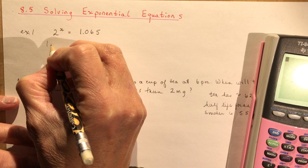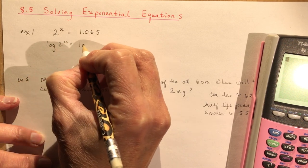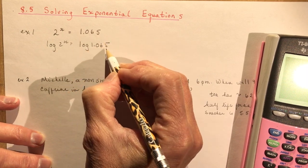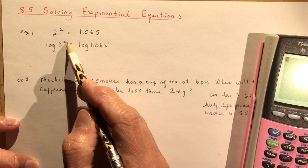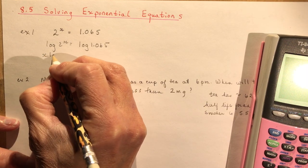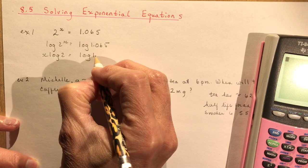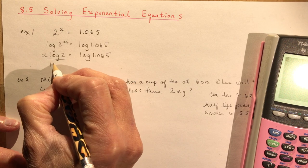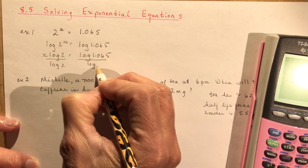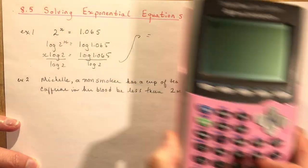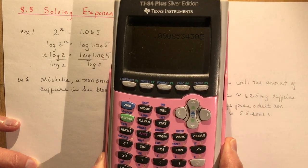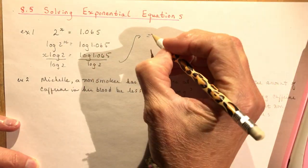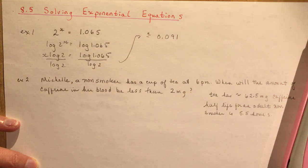So if I take the log of both sides, I have log of 2^x equals log of 1.065. The log of 1.065 is just a number, and so is log of 2, but we need to handle the x. Using the logarithm power rule, this becomes x·log 2 = log 1.065. Divide both sides by log 2 to solve for x: log(1.065) ÷ log(2) ≈ 0.091.